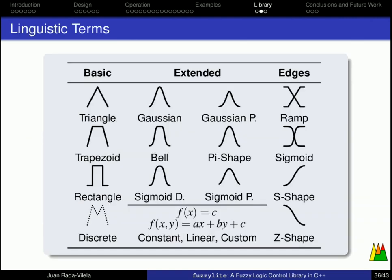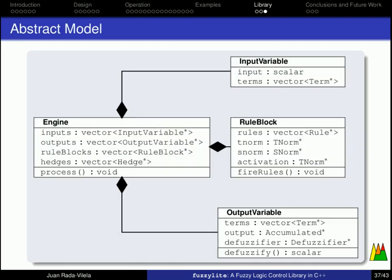This is the list of linguistic terms that are available in FuzzyLite, but there are also some others that allow you to combine different linguistic terms if you need it. And lastly, this is the abstract model of FuzzyLite.